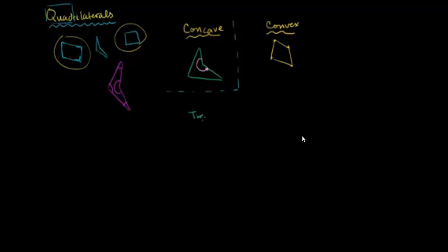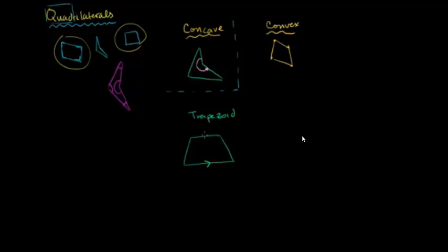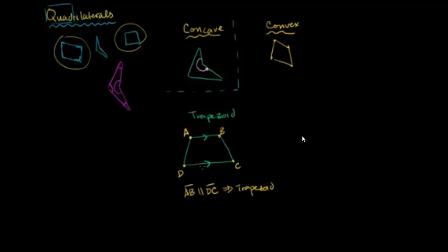Within convex quadrilaterals, one type is a trapezoid. A trapezoid is a convex quadrilateral, and sometimes the definition is a little different — people use different definitions. Some people will say a trapezoid is a quadrilateral that has exactly two sides that are parallel to each other. So, for example, if I call this trapezoid ABCD, we could say that segment AB is parallel to segment DC, and because of that we know this is a trapezoid. Some people say exactly one pair of parallel sides, but others say at least one pair of parallel sides.